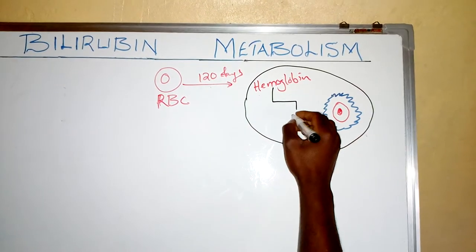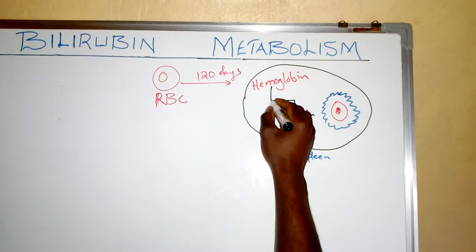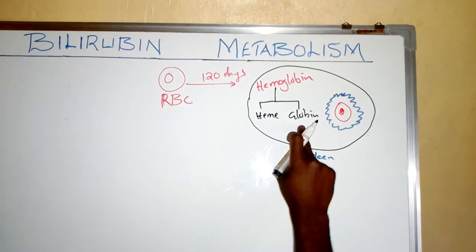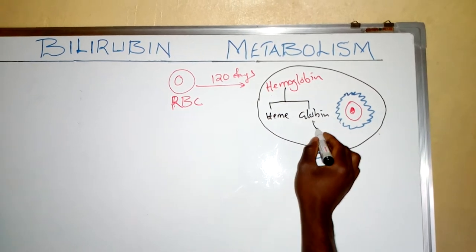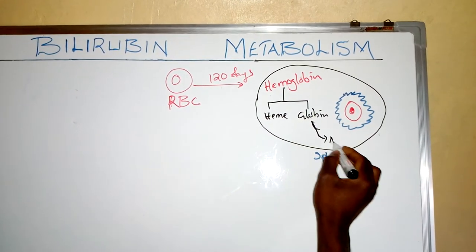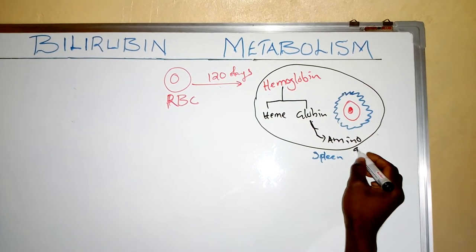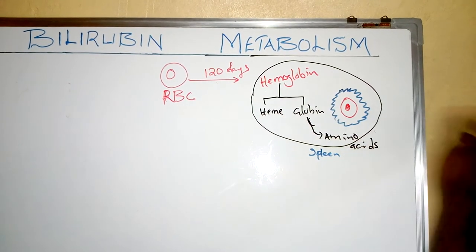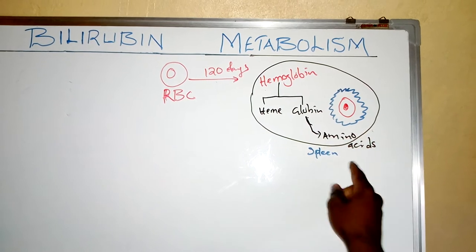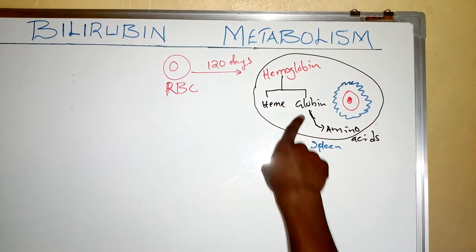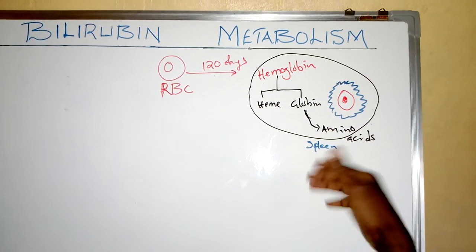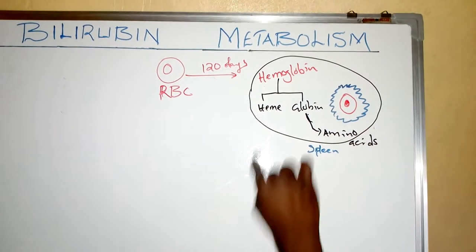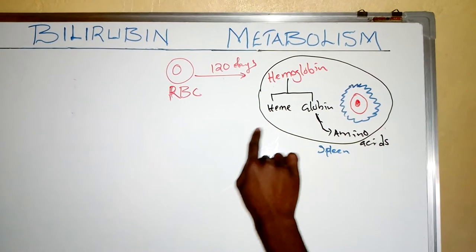The hemoglobin will be broken down into globin and heme. The globin will further be broken down into amino acids, and these amino acids are going to be used by the body cells — they will enter the circulation and go to the bone marrow for reuse again in the formation of other erythrocytes.